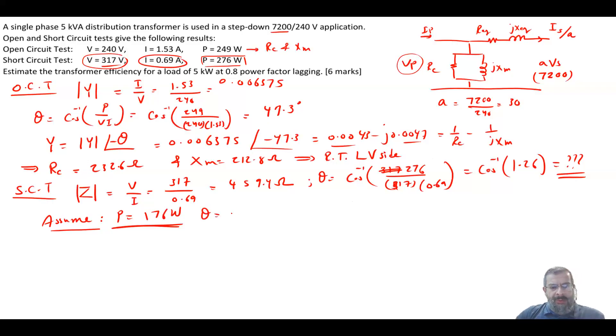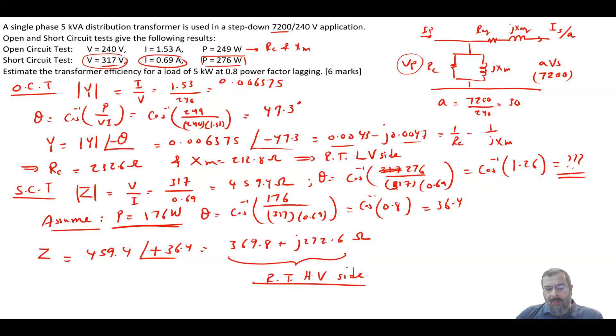So now theta will be equal to cosine inverse of 176 over 317 times 0.69, which is equal to 36.4. So your Z is equal to 459.4 angle of plus 36.4, which is equal to 369.8 plus J272.6 ohms. And this basically is referred to the high voltage side. Now, I decided to use the model referred to the high voltage side. So I will use these values as the R, but I will change the RC and XM by multiplying by A square.